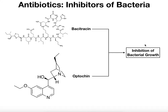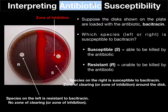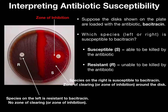Susceptible means that the bacteria is able to be killed or inhibited by that antibiotic. So we're going to have two results in this first video: either resistant or susceptible. Now let's look at the actual test. Here we're doing a simple interpretation of antibiotic susceptibility. I have a plate — on the left side I have one species, and over here on the right I have a different species.